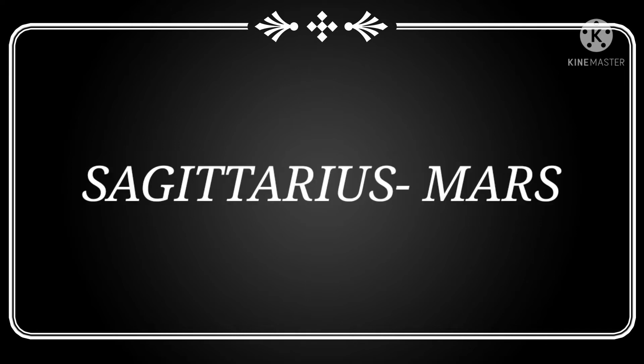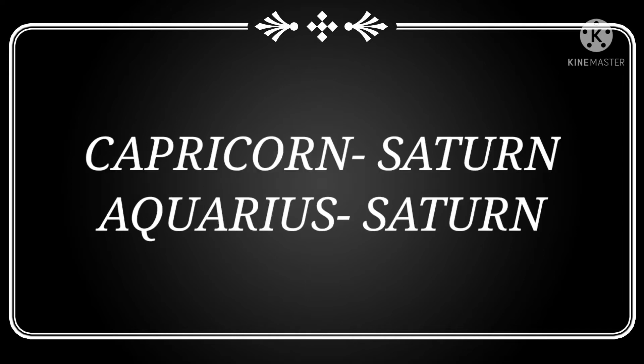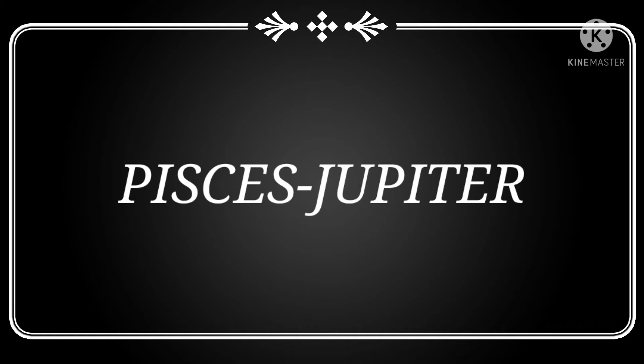Then comes Sagittarius, ruling planet is Jupiter. Then comes Capricorn, ruling planet is Saturn. Then comes Aquarius, ruling planet is Saturn again. And then comes Pisces, ruling planet is Jupiter.